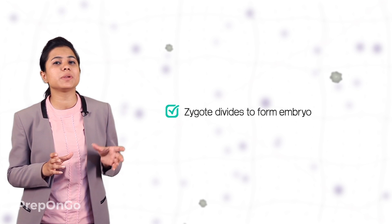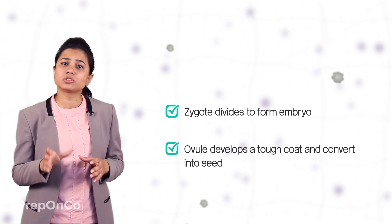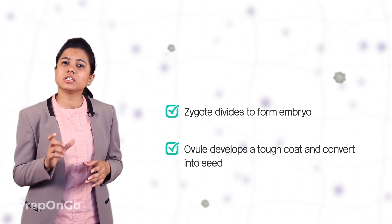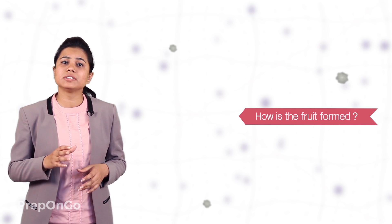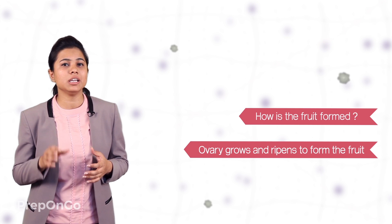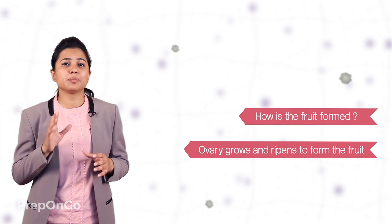So we saw how the zygote was formed, but the process is not yet complete since the seed has not been formed. After fertilization, the zygote present inside the ovule divides multiple times to form the embryo. The ovule also starts to develop a tough coat around itself and gets converted into a seed — this is how the seed is formed. During the formation of the seed from the zygote, the ovary starts to grow rapidly and ripens to form the fruit. The fruit which is formed protects the seed.